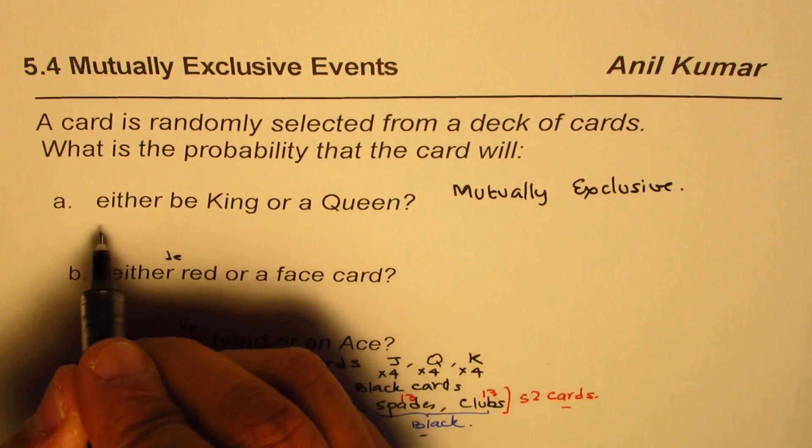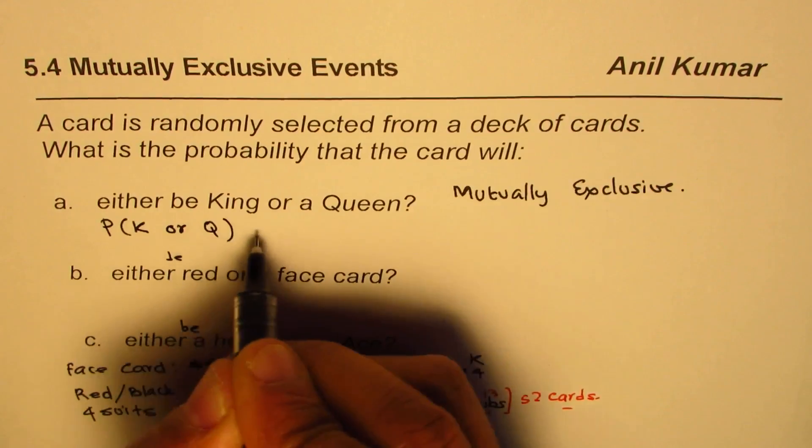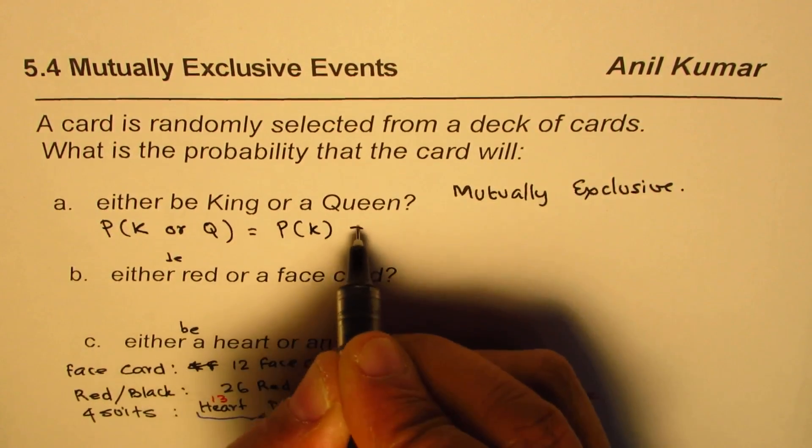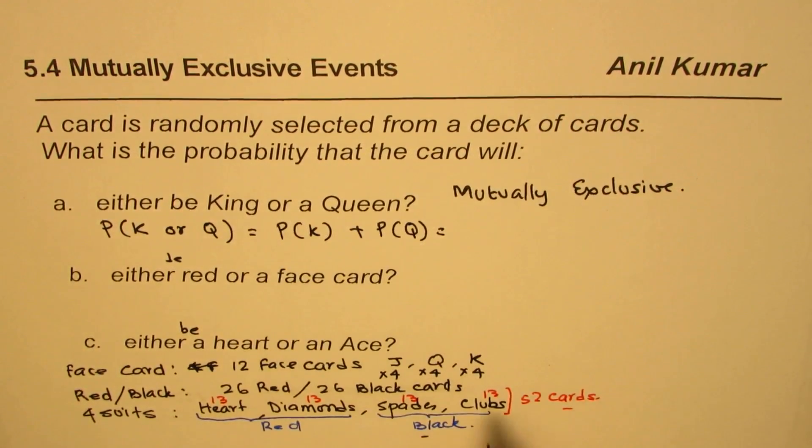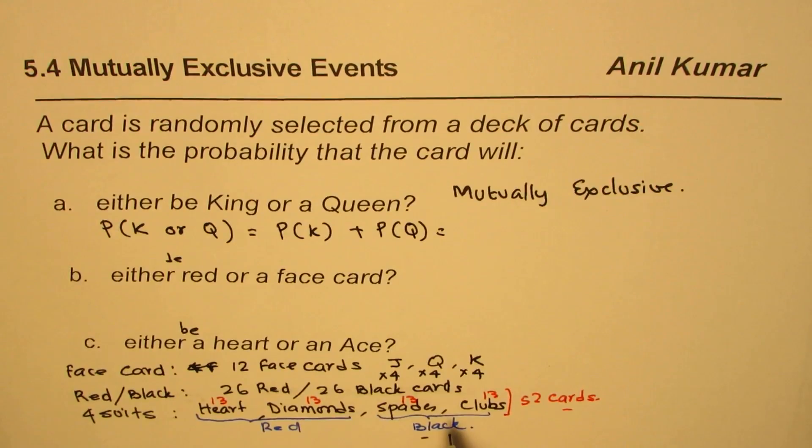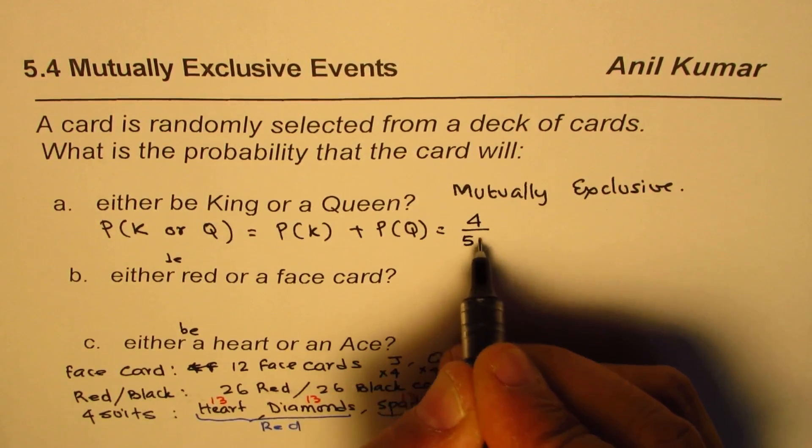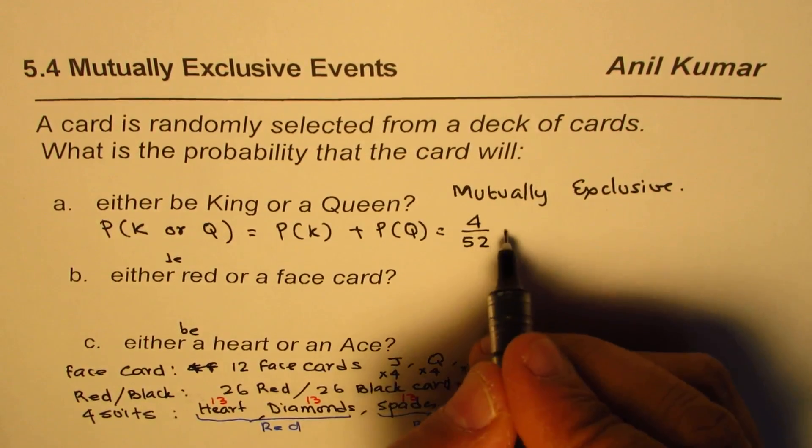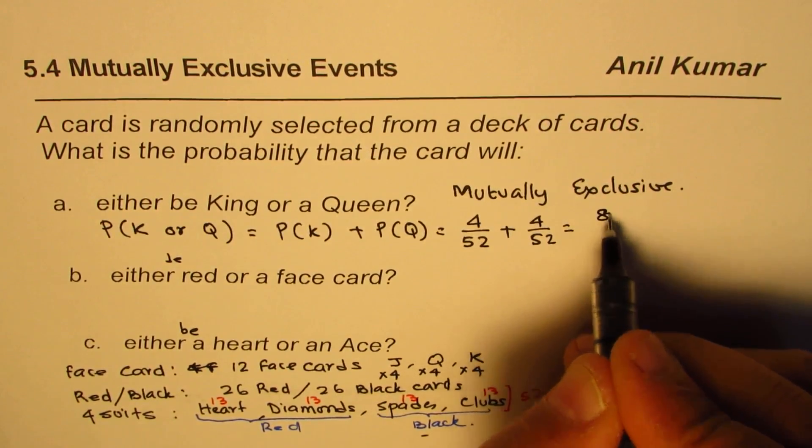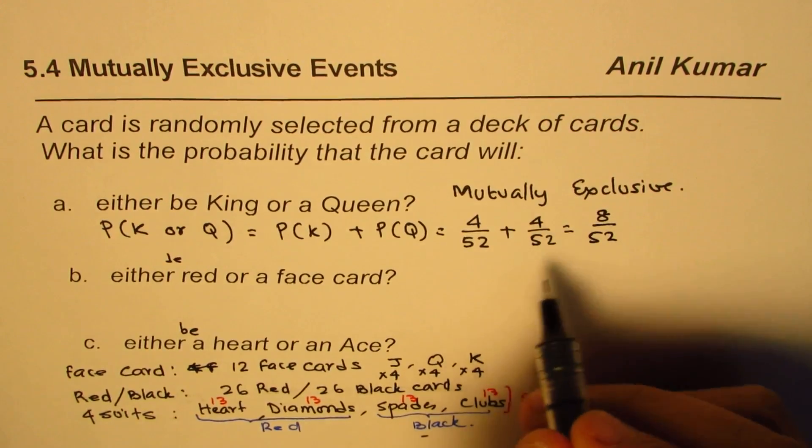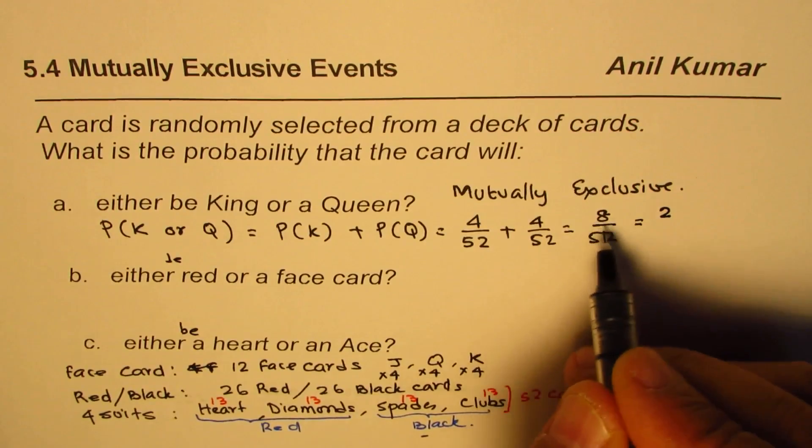The probability of getting king or queen is the probability of getting king plus the probability of getting queen. There are four kings and four queens, so the probability is 4 over 52 plus 4 over 52. You can combine them and write this as 8 over 52, which simplifies to 2 over 13.